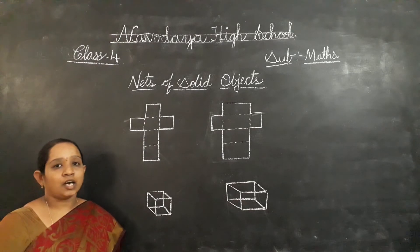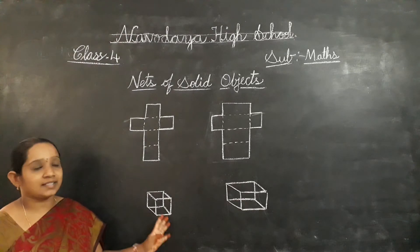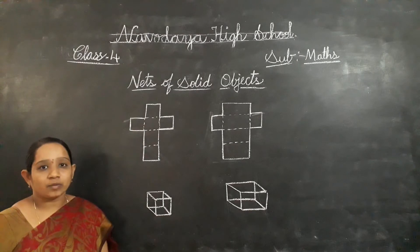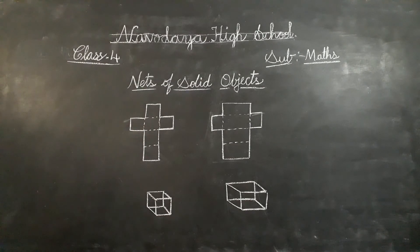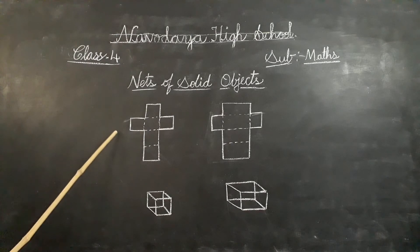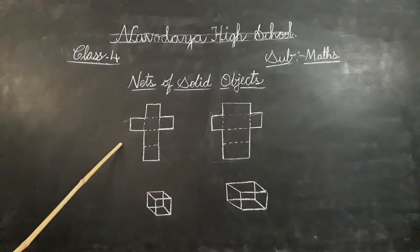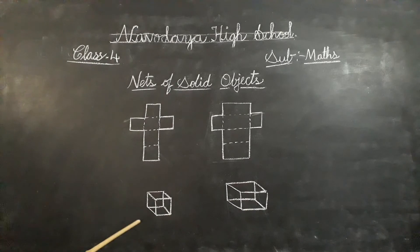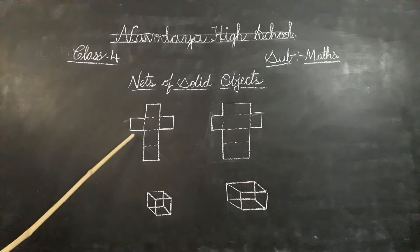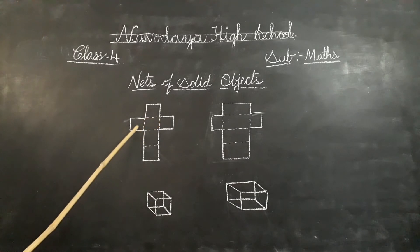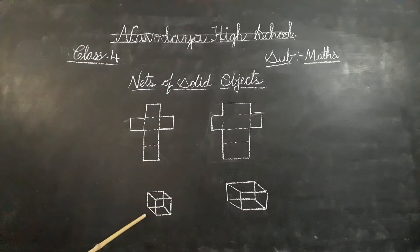Good morning children. Next topic is nets of solid objects. A net is the two-dimensional pattern of a three-dimensional figure that can be folded to form the figure. The net has to be folded along the dotted lines to form the edges of a cube.